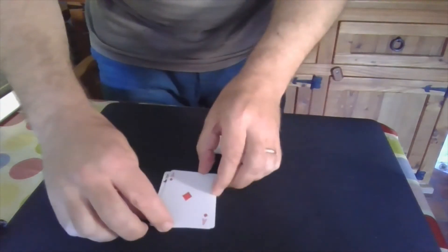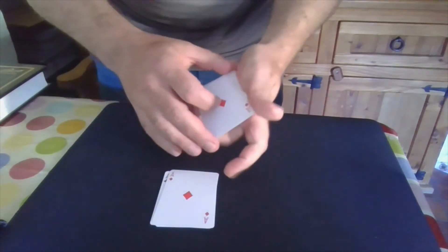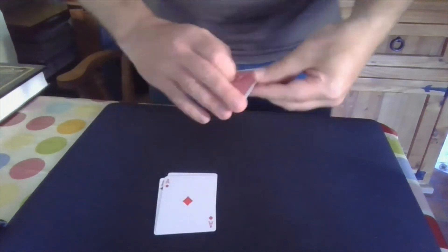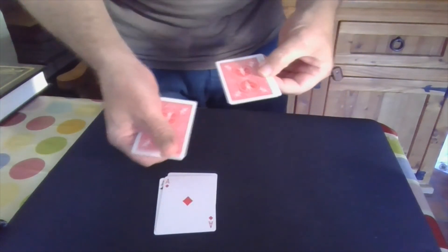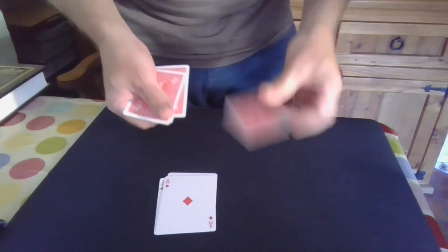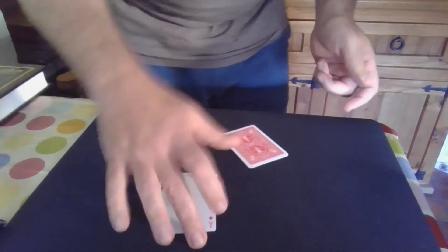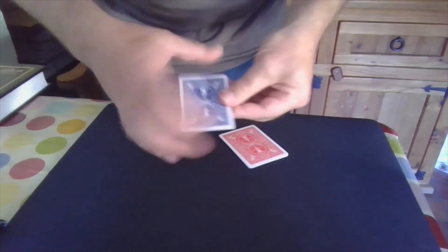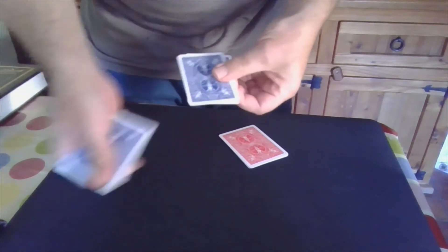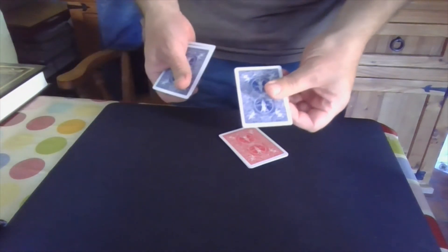We simply square, pick up a pile, tap, and now we have one, two, three, four red cards. Over here, one, two, three, four blue cards.